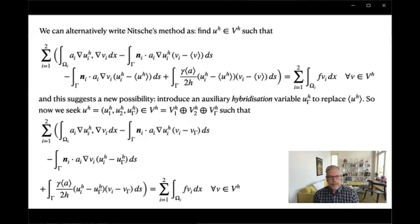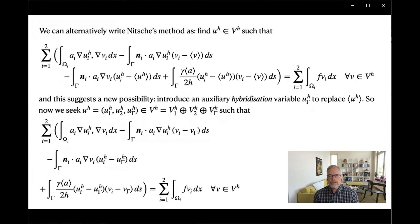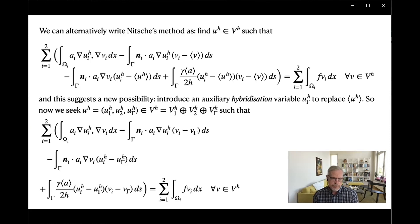We can rewrite the interface formula by introducing means of test functions and approximations rather than means of conormal derivatives, integrating from the left and from the right separately. This suggests a new possibility: we can replace this mean by a hybridization variable u_gamma_h — a new unknown. Instead of knowing it's a mean, we say it's unknown and put it into our approximation scheme. We now have three functions: one in domain one, one in domain two, and one on gamma. This gives a hybrid Nitsche method.